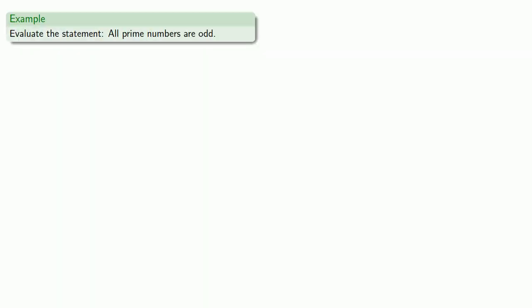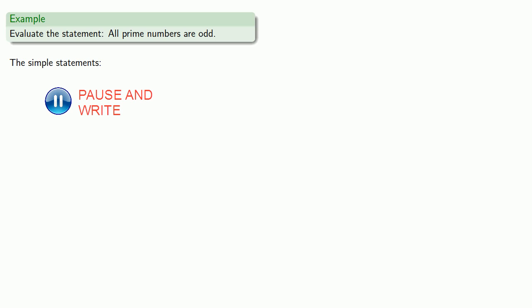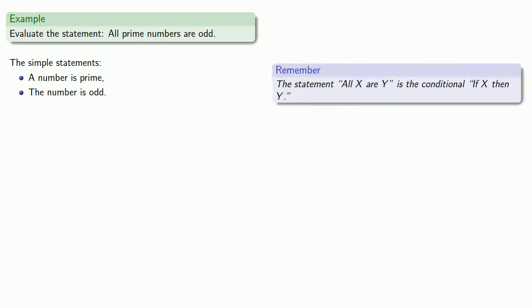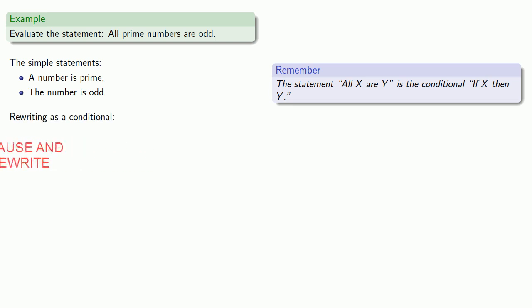For example, let's evaluate the statement 'all prime numbers are odd.' It's helpful to rewrite this as a conditional. Our simple statements are 'a number is prime' and 'the number is odd.' The statement 'all x are y' is the conditional 'if x, then y.' So we rewrite our statement as: if a number is prime, then it is odd.